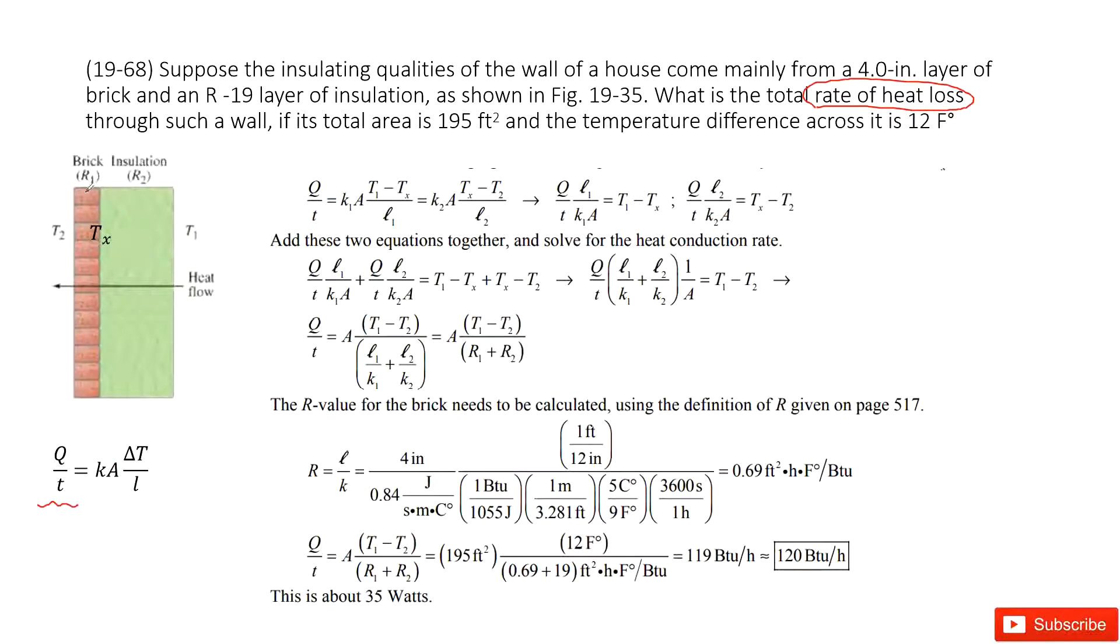For this wall, it's brick and insulation. The heat flow travels from inside the house to the outside. Temperature T1 is here, T2 at the boundary, and this is Tx.